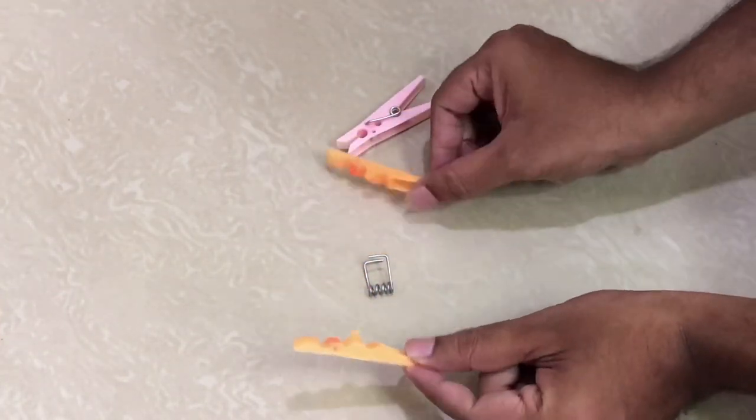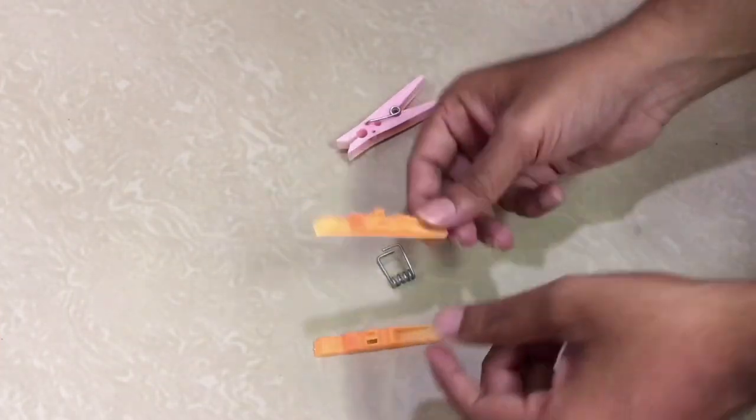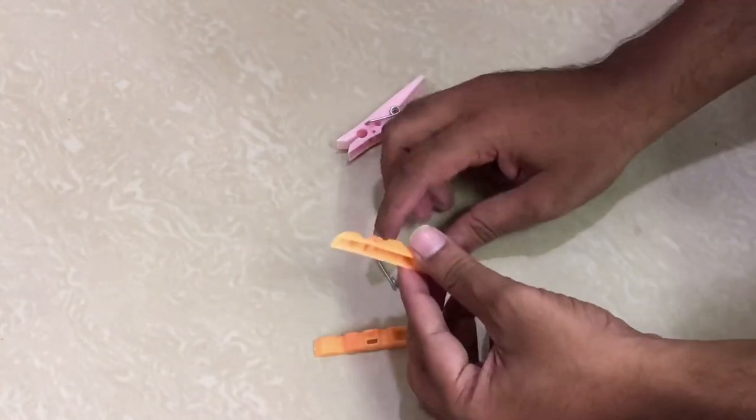I'm going to show you the three pieces: two wooden pieces and a spring piece. First, I'll show you the wooden piece.